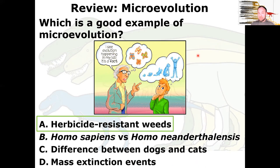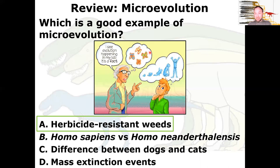Evolution can be controversial, often due to blurring the lines between micro and macroevolution. A professor says 'I see evolution happening in my lab — it's a fact,' thinking of butterflies' gene pool slowly changing over time. That is microevolution. Microevolution is a definitive fact — it's observable, it happens with bacteria, weeds, viruses, as we're finding out with COVID.